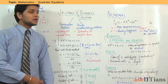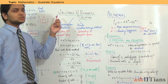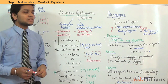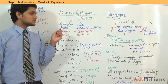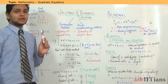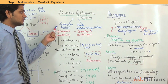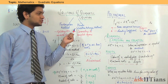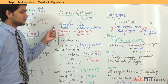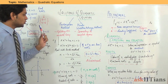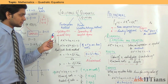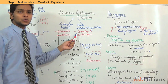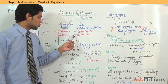Now that we are acquainted with the quadratic equation, we will see how to find its solution. There are two methods: the first one is the factorization method, and the second one is the Hindu method, also known as the Shri-Dra-Charya method. In the factorization method, we split the middle term. In the Hindu method, we convert into a whole square and then find the values of the roots.